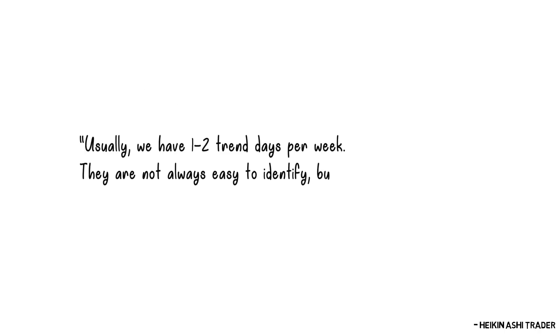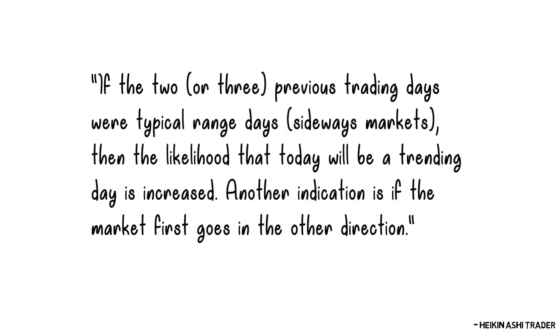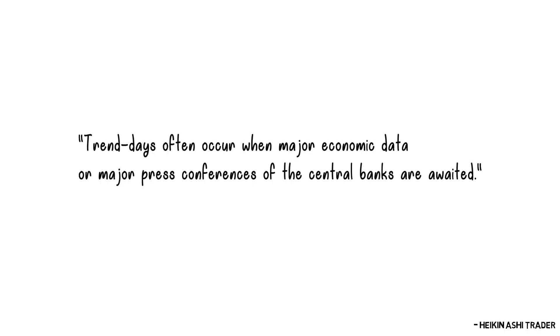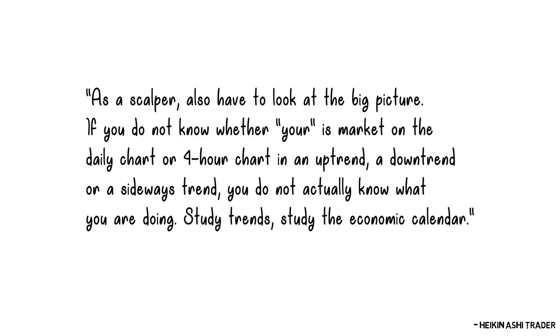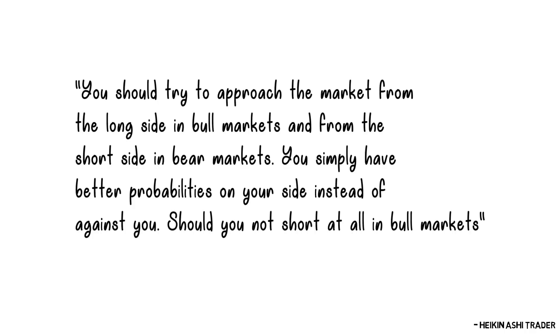Usually we have 1 to 2 trending days per week — they are not always easy to identify but there are some clues. If the 2 or 3 previous trading days were typical range days in a sideways market, then the likelihood that today will be a trending day is increased. Another indication is if the market first goes in the other direction. Trend days often occur when major economic data or major press conferences of central banks are awaited. As a scalper, always look at the big picture — if you don't know whether the euro is on the daily or 4-hour chart in an uptrend, downtrend, or sideways trend, you do not actually know what you are doing. Study trends and study the economic calendar. You should try to approach the market from the long side in bull markets and from the short side in bear markets — you simply have better probabilities on your side.